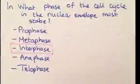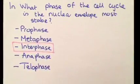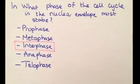Question 3: In what phase of the cell cycle is a nuclear envelope most stable? Prophase, metaphase, interphase, anaphase, or telophase? The answer is interphase.